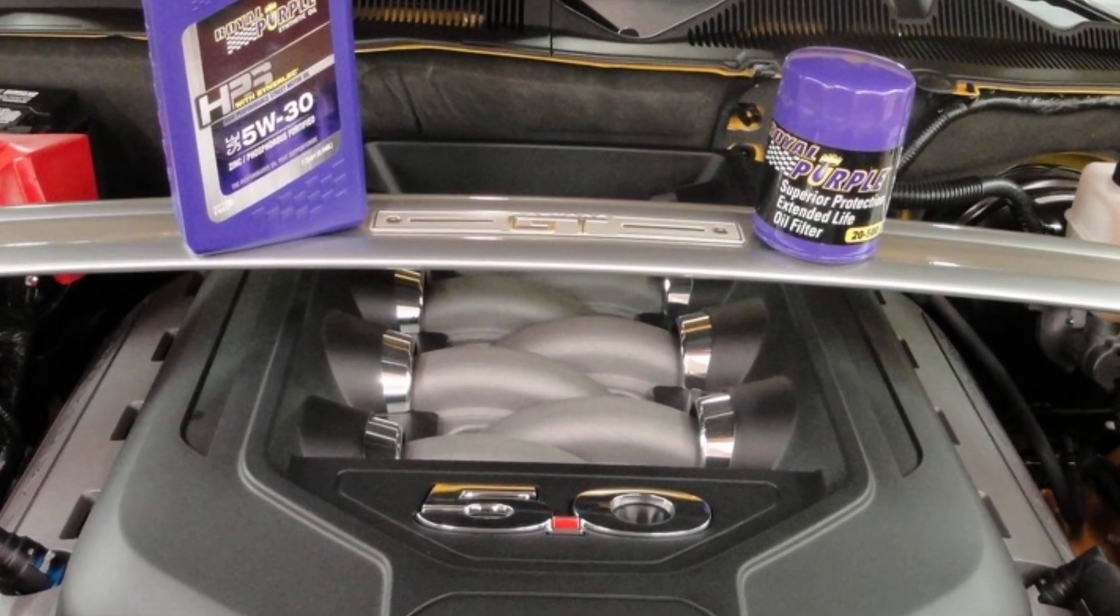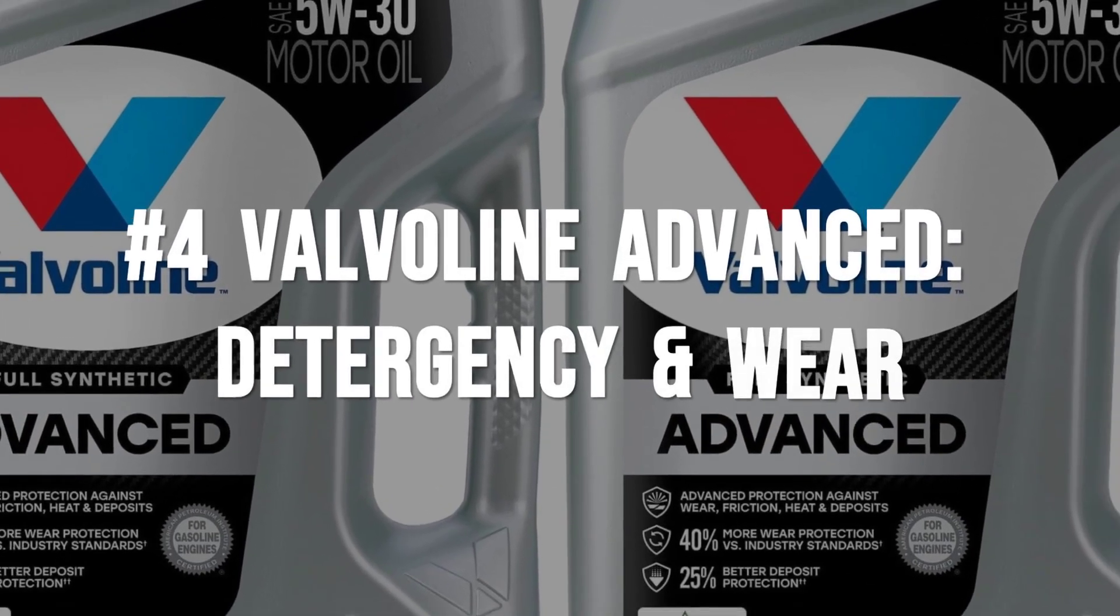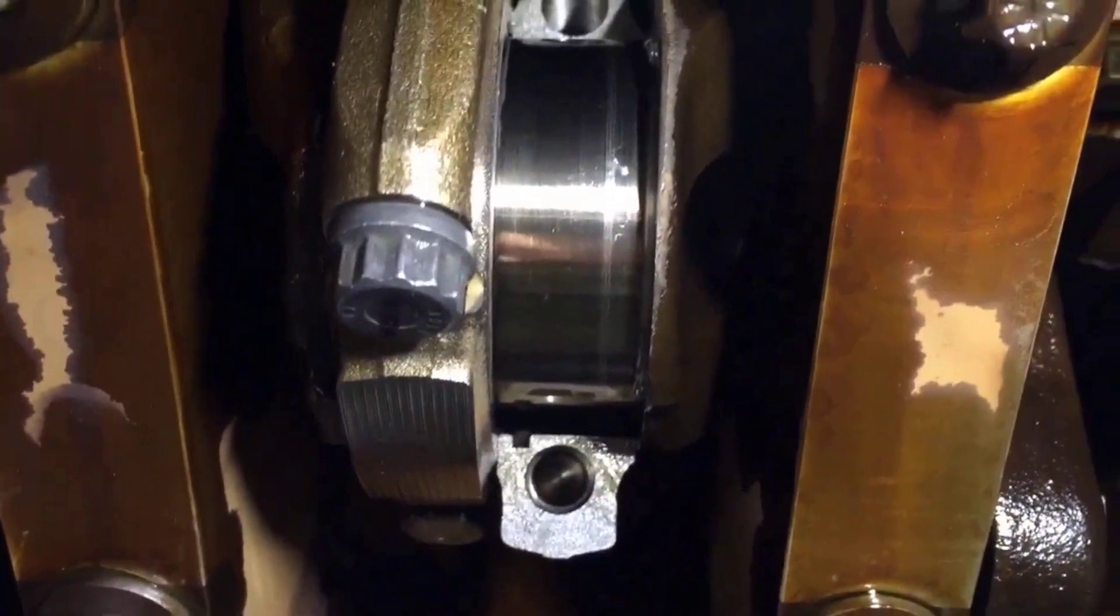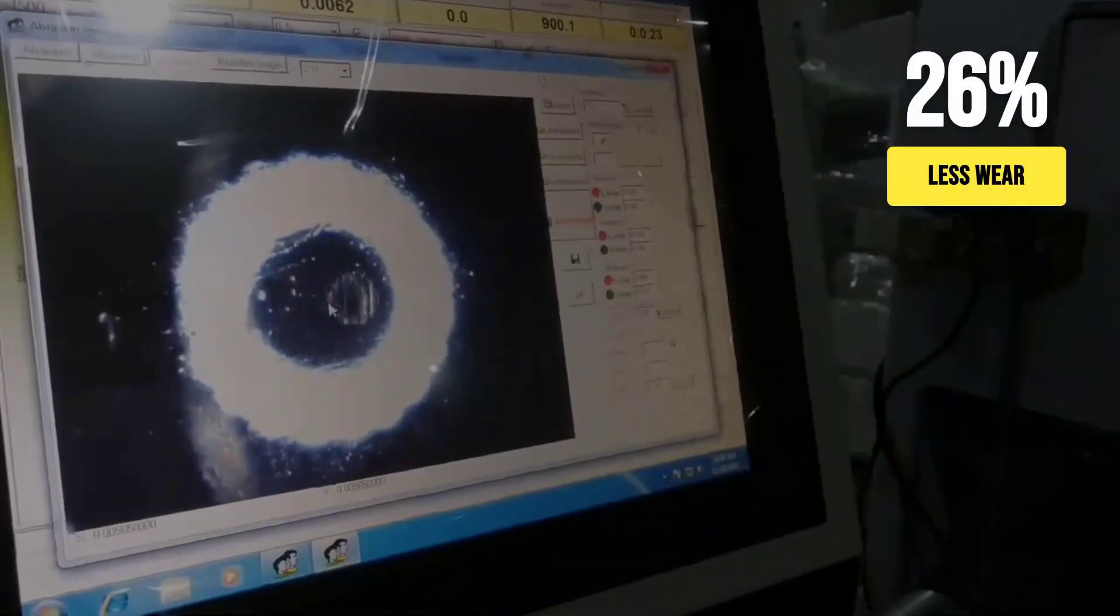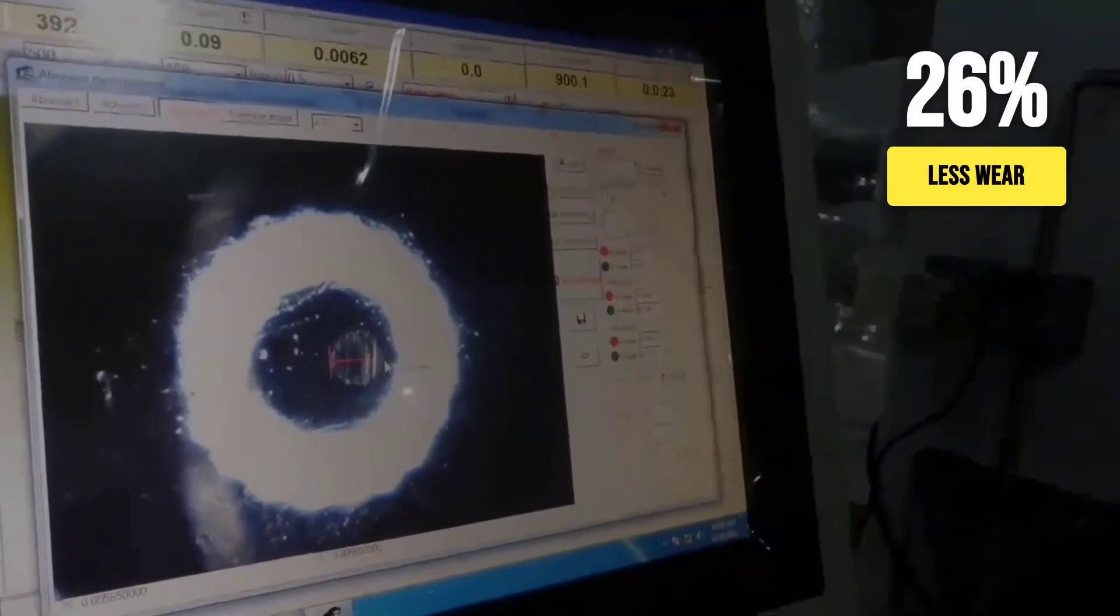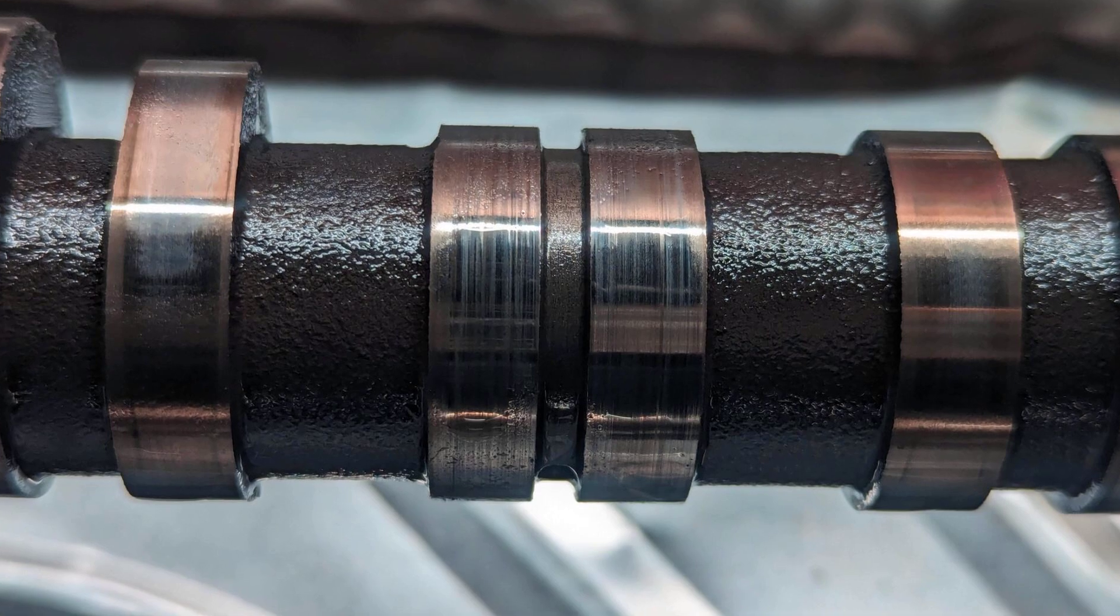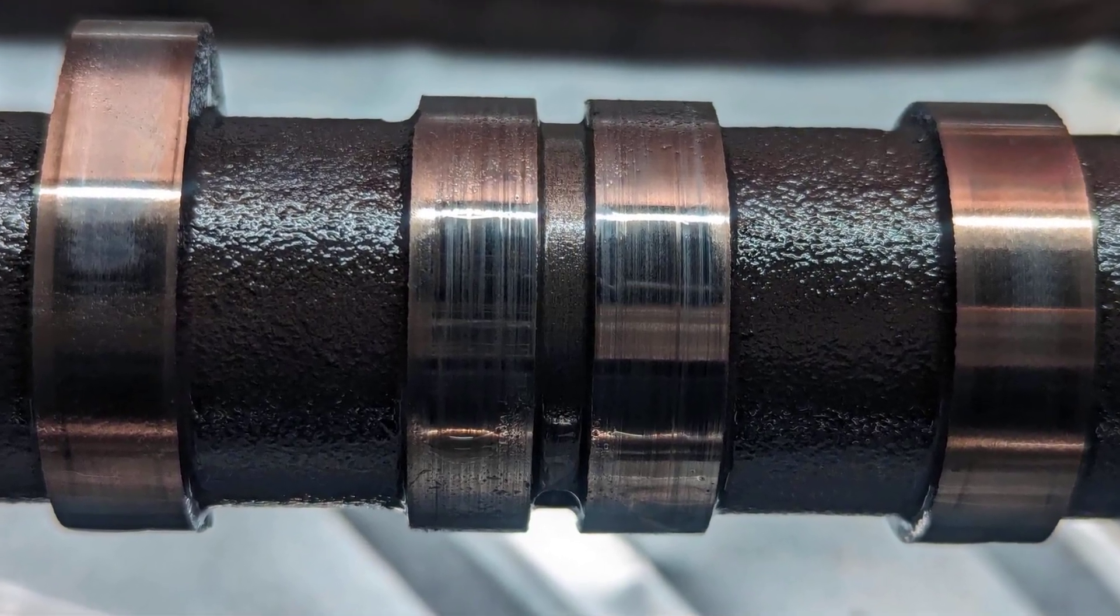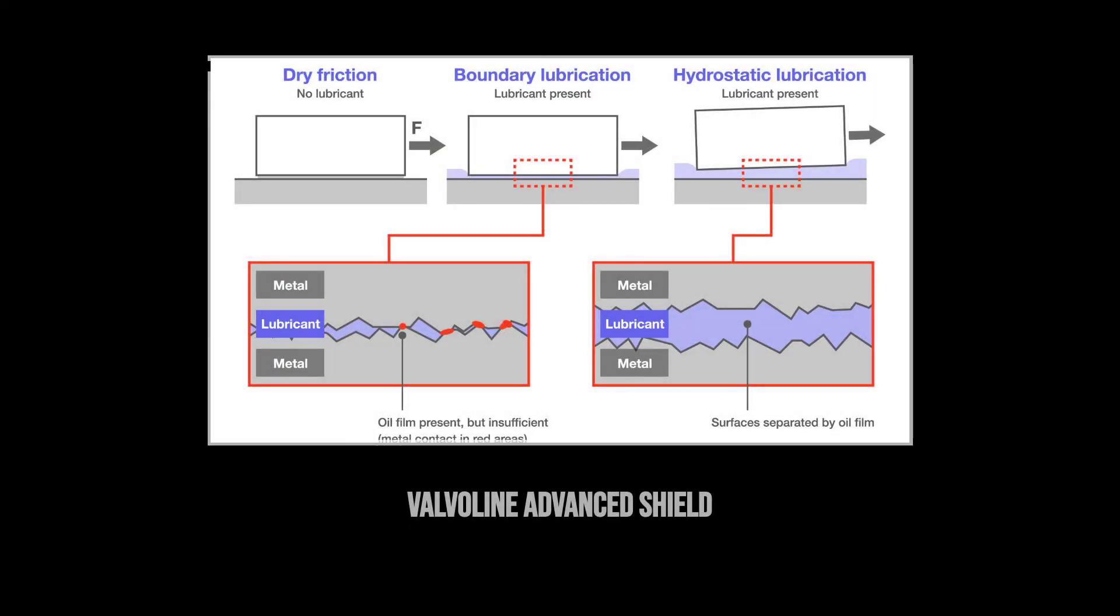Valvoline Advanced full synthetic climbs into the top four by excelling where many oils simply meet the minimum: boundary wear protection and cleanliness. In independent four ball wear tests, this oil consistently produces a smaller wear scar than most mid-tier synthetics, a direct measure of its ability to keep metal parts from grinding against each other when the oil film thins under stress.